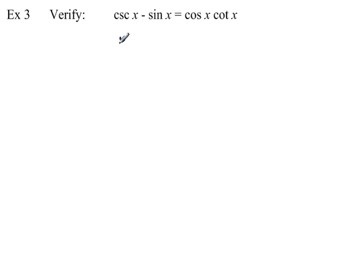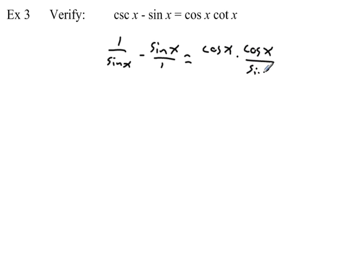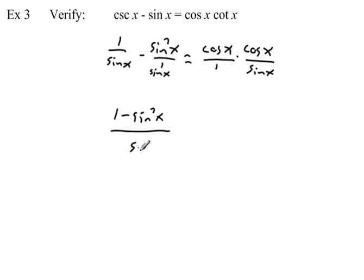Third example: cosecant of x minus sine of x equals cosine of x times cotangent of x. No squared terms, so let's just convert everything to sine and cosine. Cosecant is one over sine of x, minus sine of x over one. Cotangent is cosine of x over sine of x. Getting a common denominator by multiplying top and bottom by sine of x gives one minus sine squared of x over sine of x.